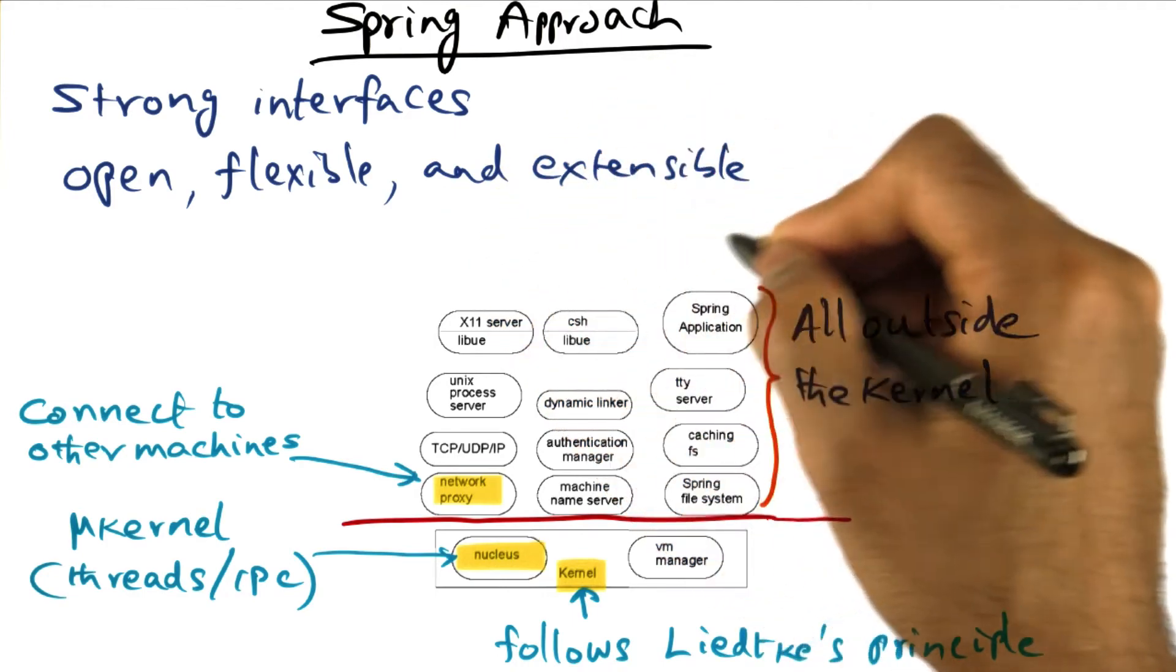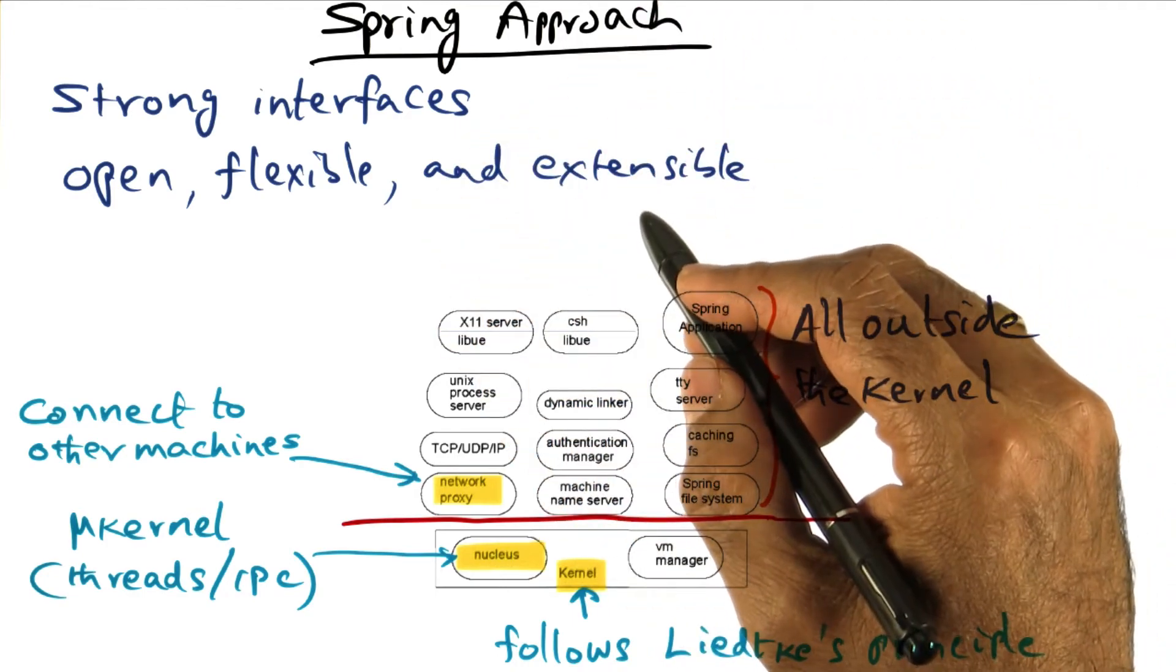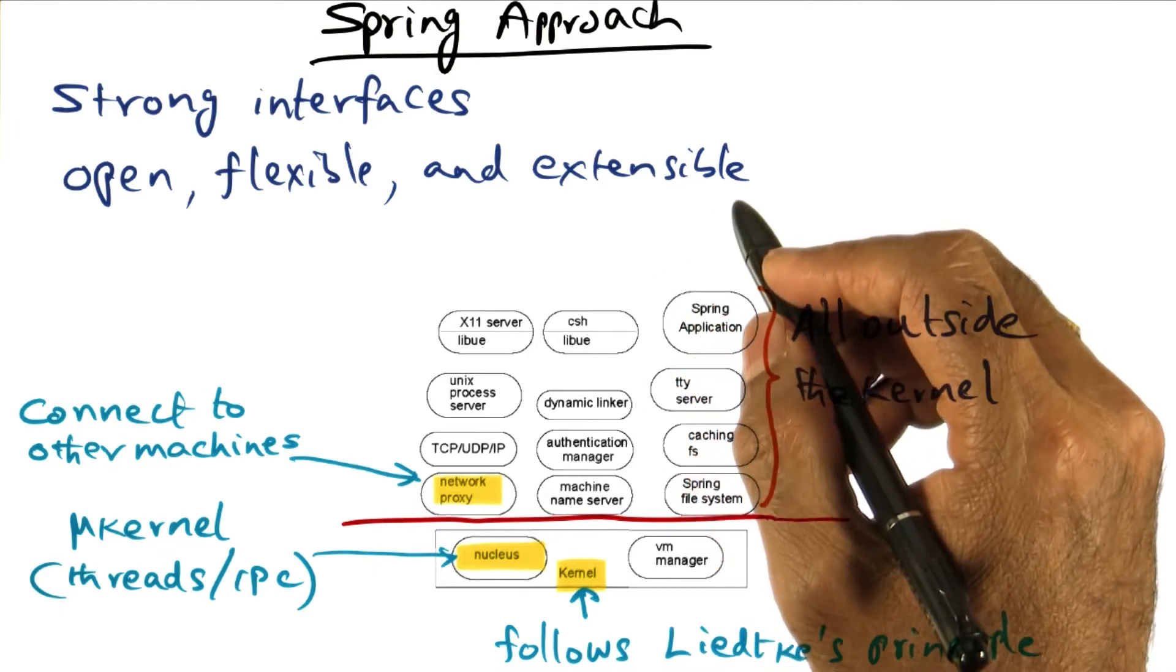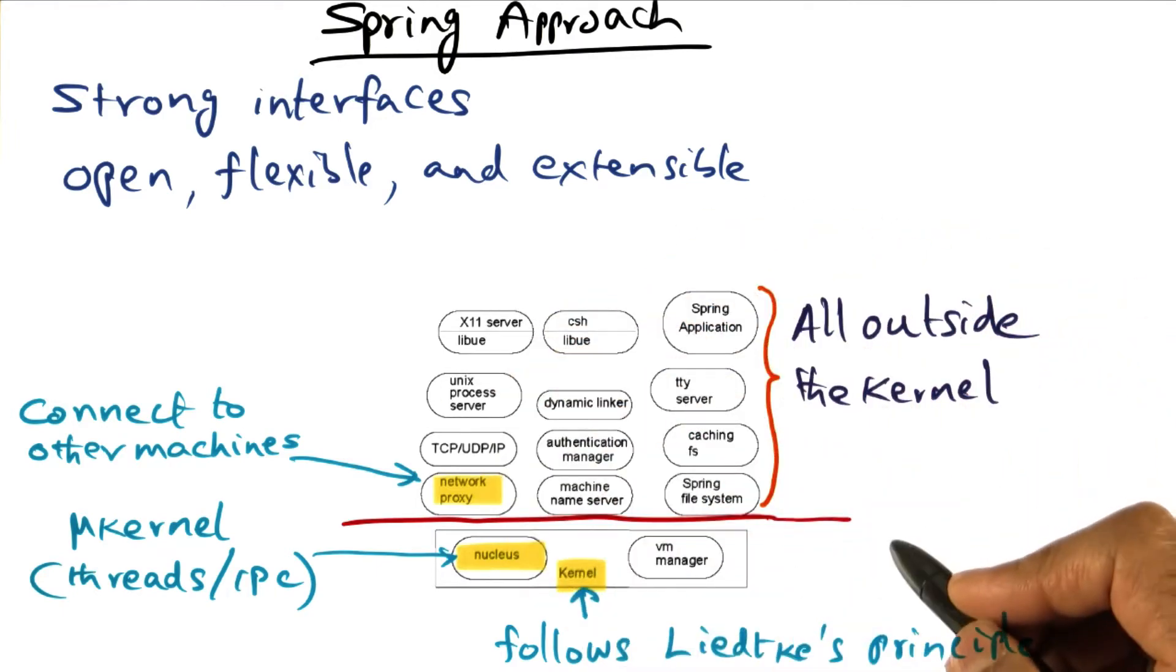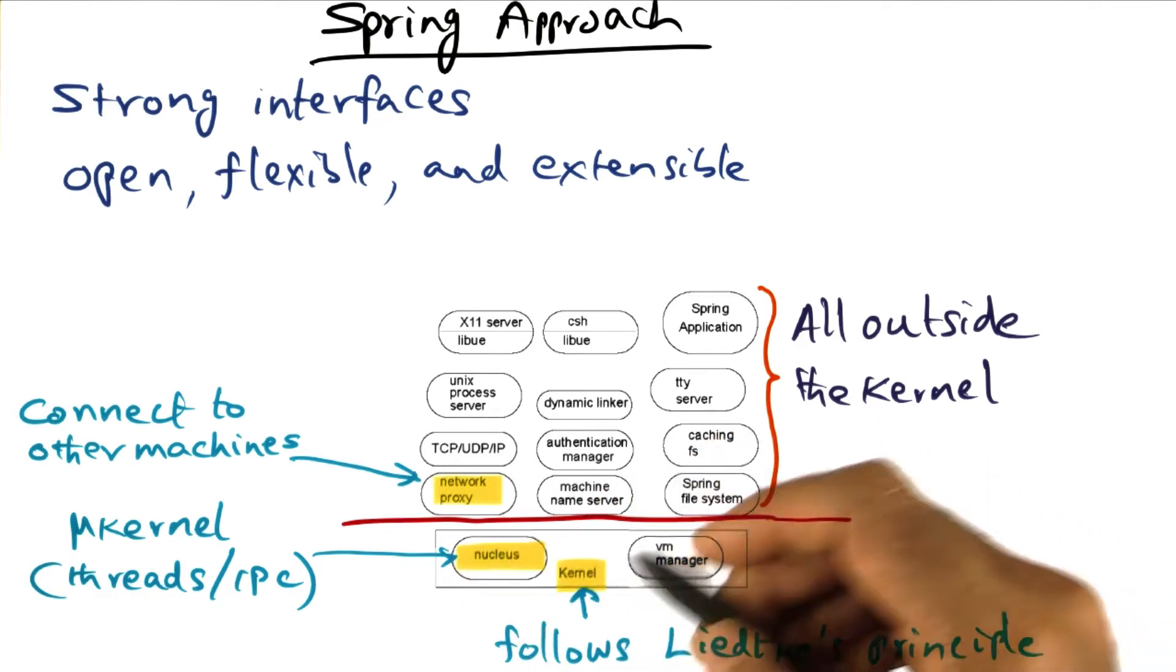The other part of Spring's approach is extensibility. Extensibility naturally leads to a microkernel-based approach, and that's what you see here. This is the structure of the Spring system.